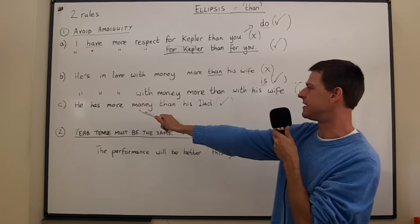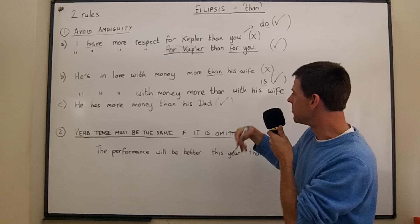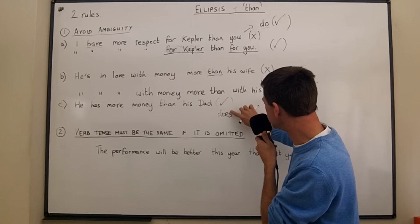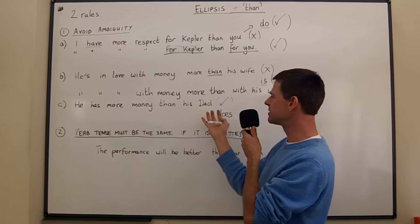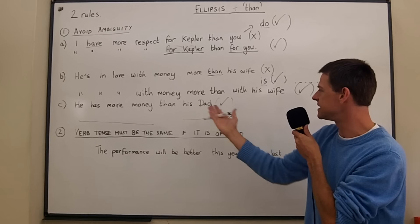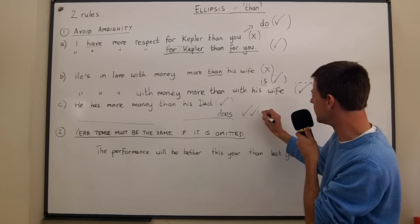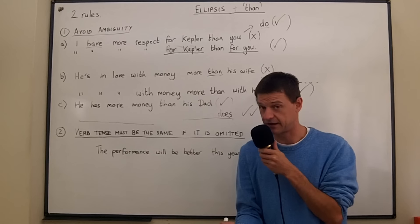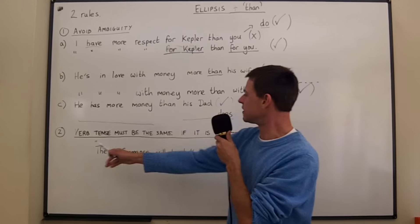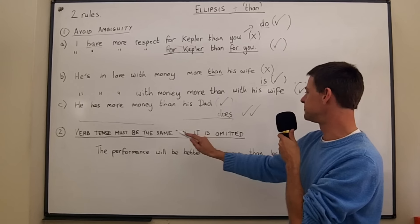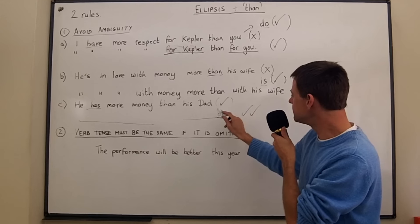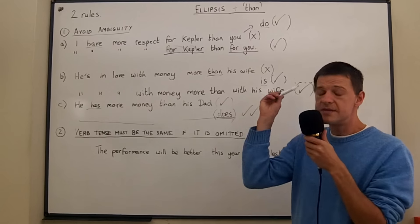The second rule: the verb tense must be the same if it is omitted. Here: 'He has more money than his dad does' — it's still correct to put 'does' at the end, and it creates nice parallelism: 'he has... than his dad does.' Both sides of 'than' are balanced. If the verb tense is the same — present simple and present simple — the auxiliary can be omitted, but using it is preferred. However, this isn't always the case.